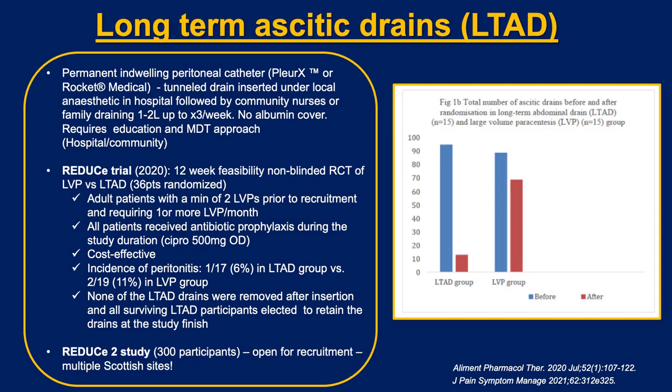The REDUCE study was published in 2020 and looked at the feasibility of using tunnelled long-term ascitic drains versus standard of care, which is large volume paracentesis, in a small sample size. The main concern with long-term drains is infection, but importantly there was no difference in the rate of bacterial peritonitis between the two groups. The drains were found to be cost-effective and all patients were covered with prophylactic antibiotics. Interestingly, all patients elected to keep their drains at the end of the 12-week study period. This is a disease of end of life and we have several options, not all suitable for all patients, so we really have to focus on the patient's characteristics.